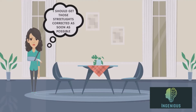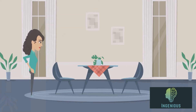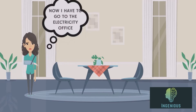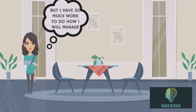I should get those street lights corrected as soon as possible. I should call the electric office. Why does their number always not connect? Now I have to go to the electric office, but I have so much work to do — how will I manage?